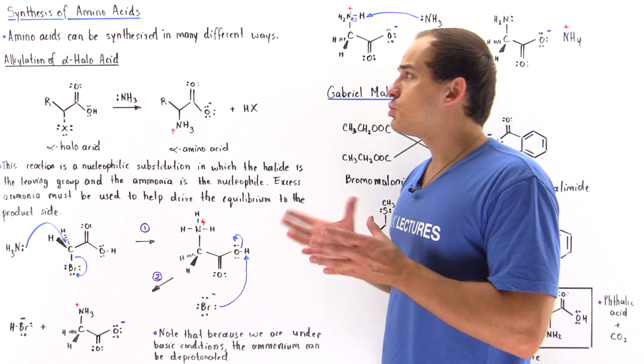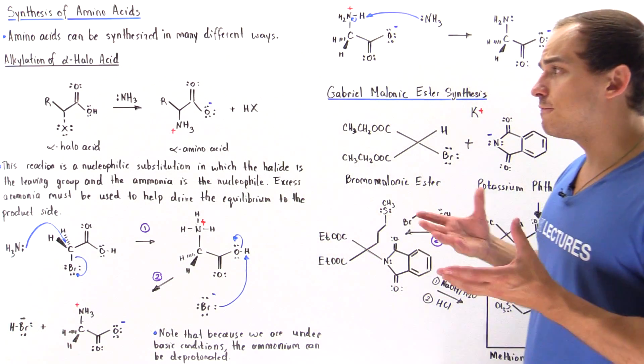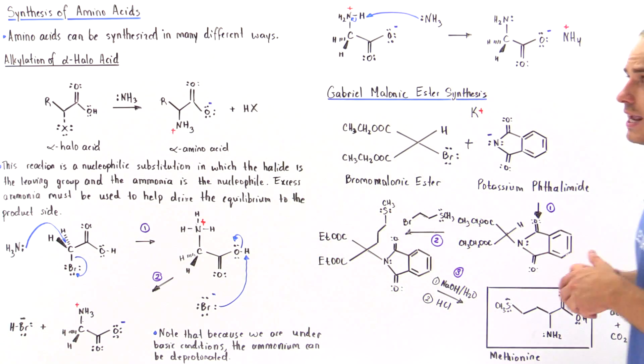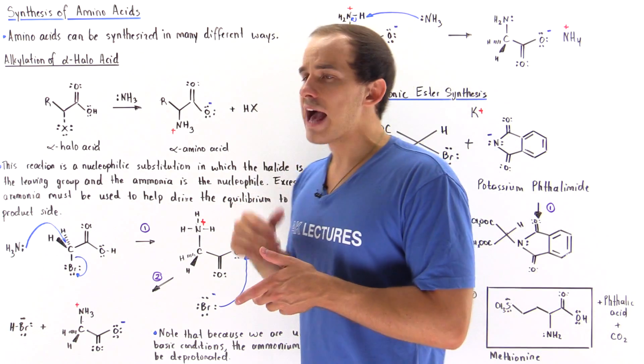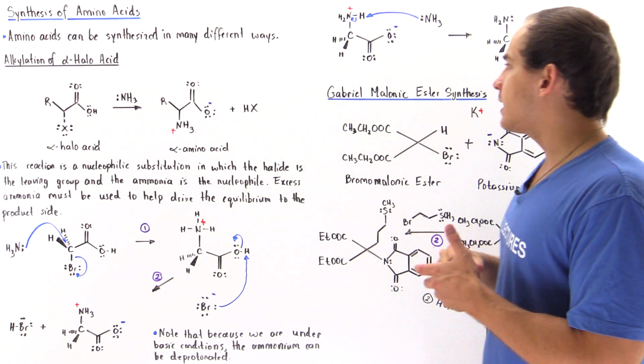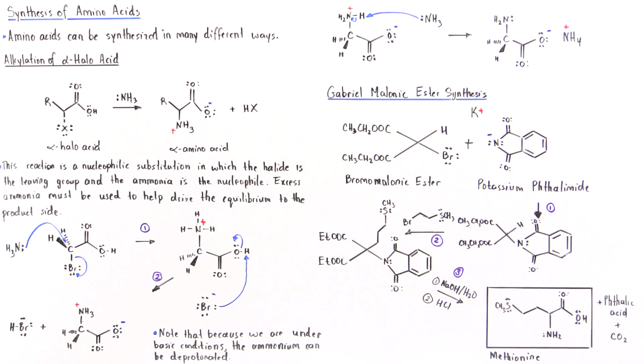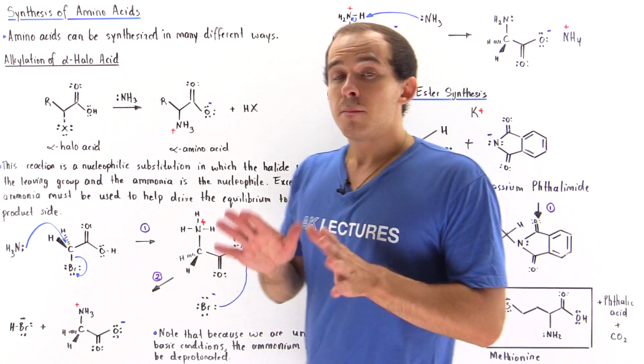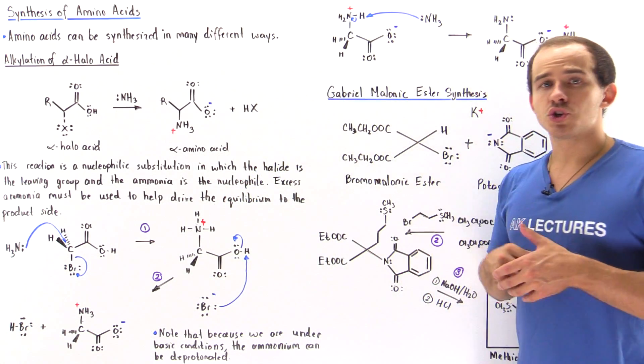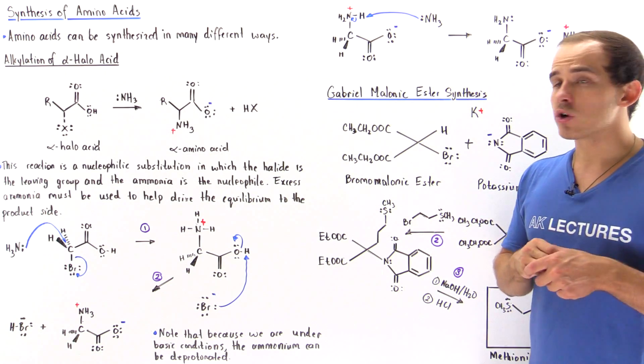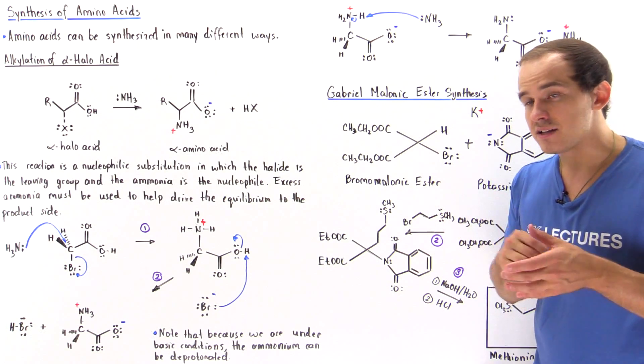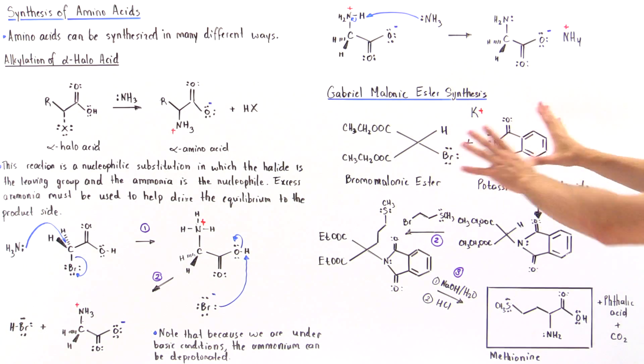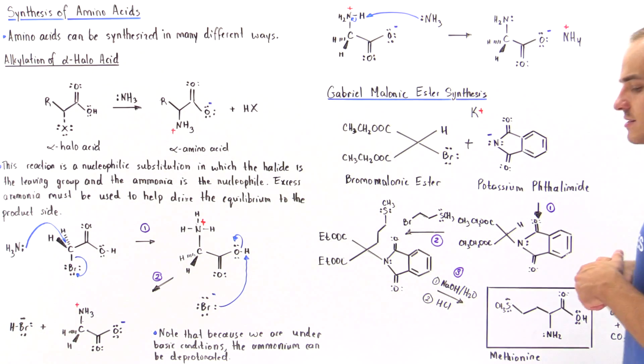So, we see that there are two different ways in which we can form amino acid. One is the alkylation of alpha-haloacid and the second one is the Gabriel-Malonic ester synthesis. Now, there's actually a third way but we're going to discuss that in a future lecture. In the next lecture, we're going to discuss the details of the reaction mechanism of the Gabriel-Malonic ester synthesis.